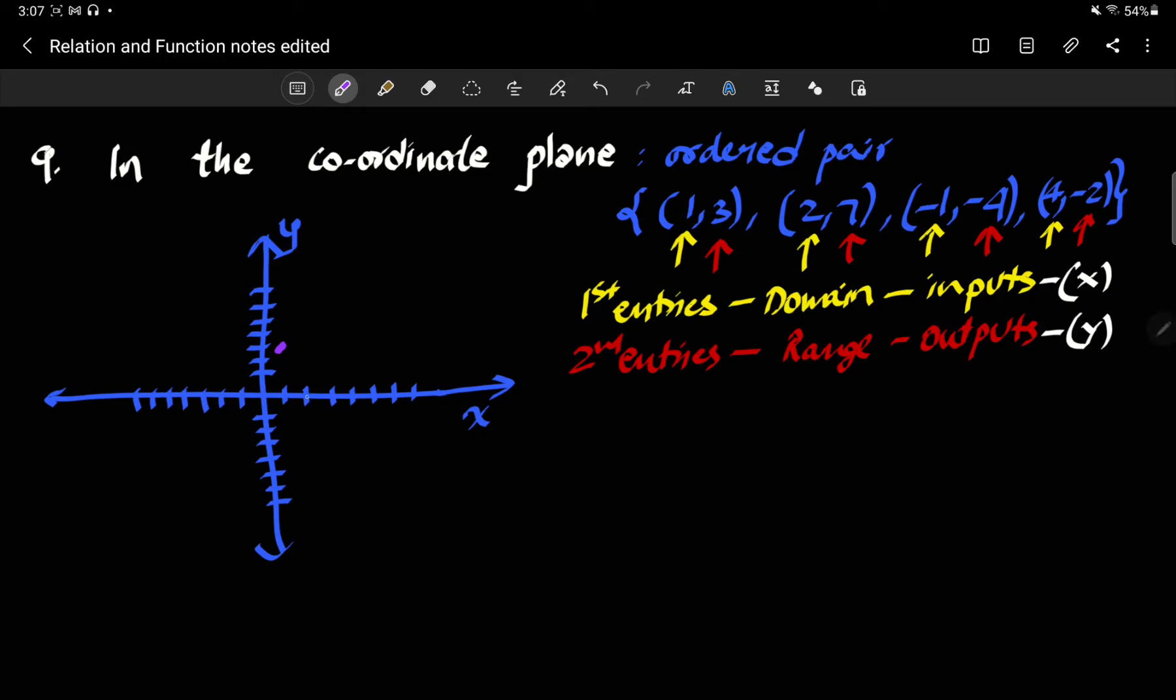The second one says it's (2,7), then I have (-1,-4), and then I have (4,-2). If I were to label them, this would be (1,3), (2,7), (-1,-4), (4,-2). So what this has given me is another way to view this function as these points on the plane, on the coordinate plane.